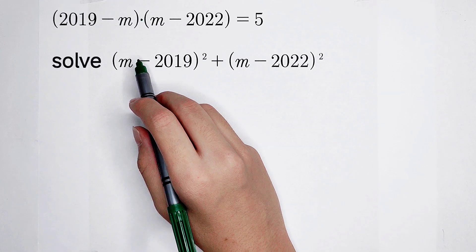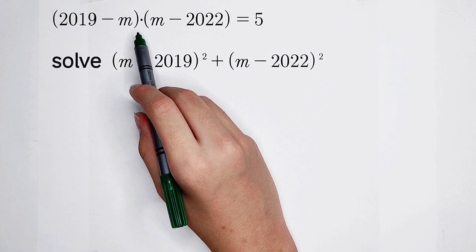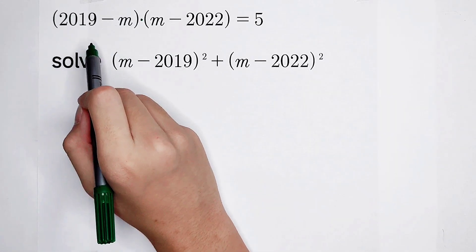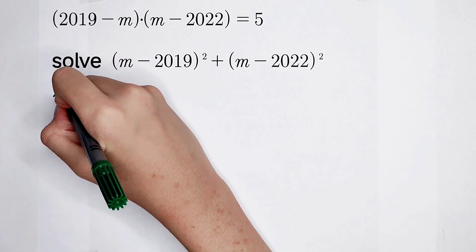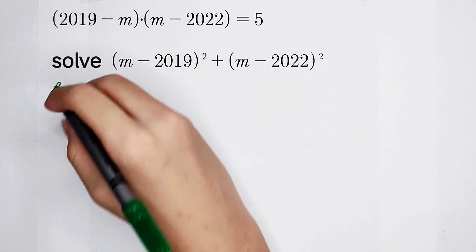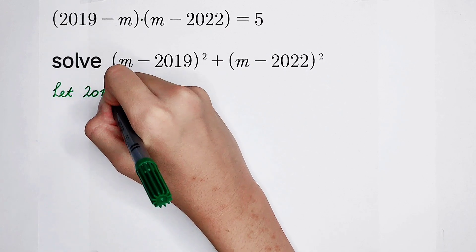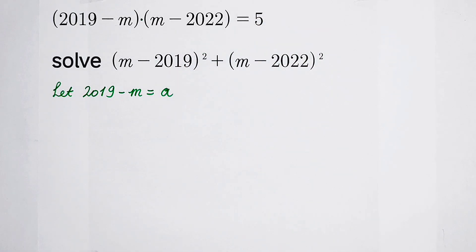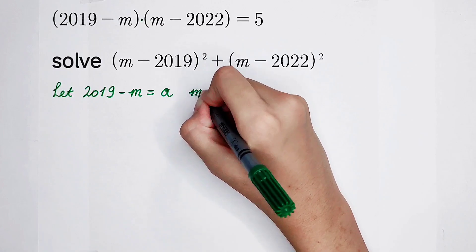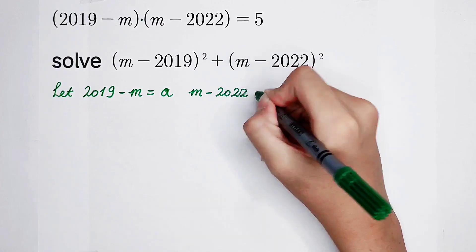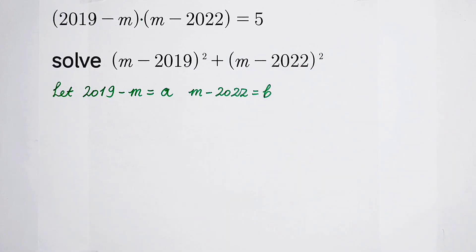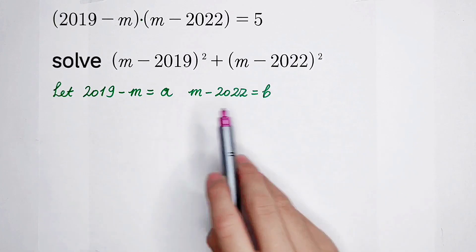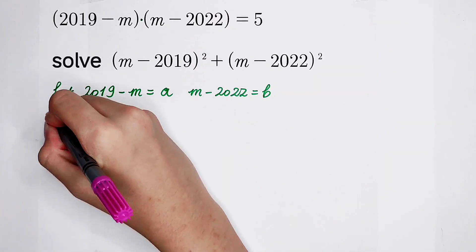Usually for dealing with this kind of question, when we have multiplication between two brackets, we let them be variables. For example, I let 2019 minus m equal to a, and m minus 2022 equal to b. Then the expression has to be written in terms of a and b.